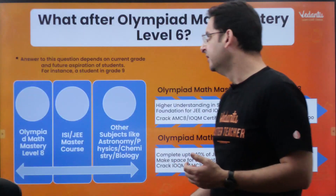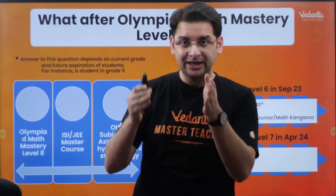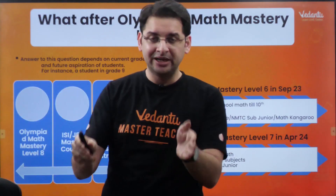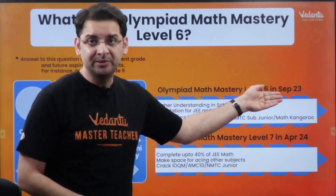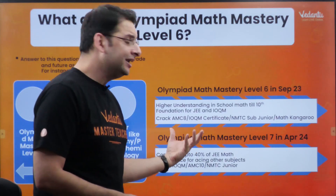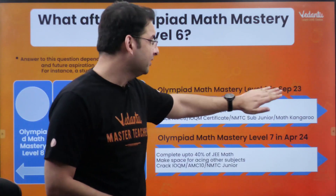IOQM is a common exam for all students from class 8th to class 12th. Now, what comes after Level 6? These courses run in September as well as in April. Levels 5, 6, and 7 are going to be run in both September and April. So once you take Level 6 in September 2023, you can always go for Level 7 in April 2024. Level 7 is primarily aimed at the IOQM examination and will also help you prepare for the RMO examination.